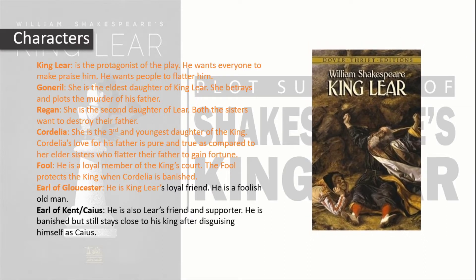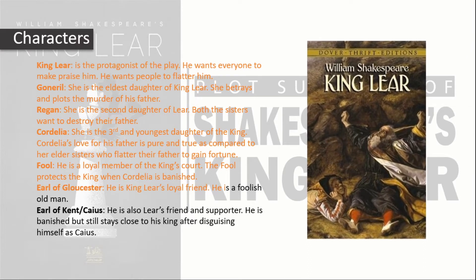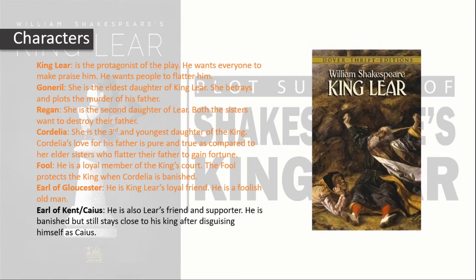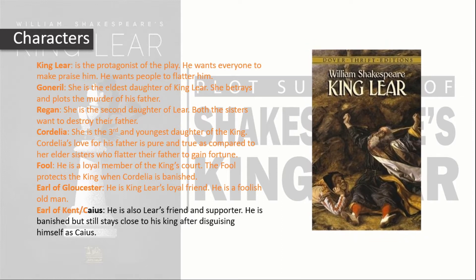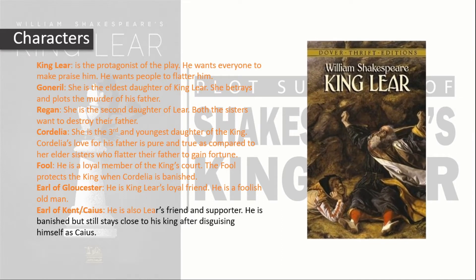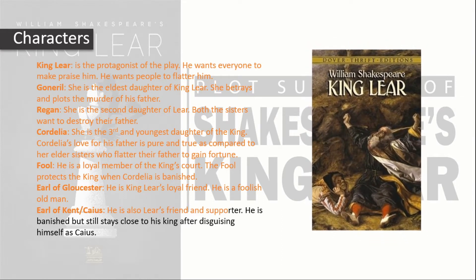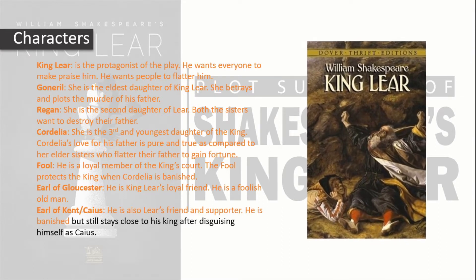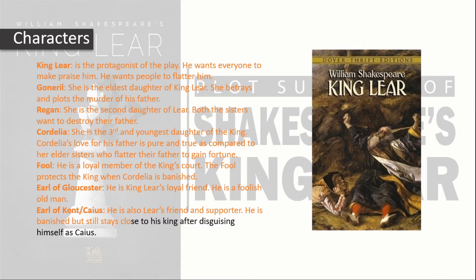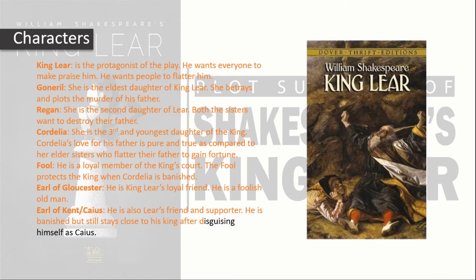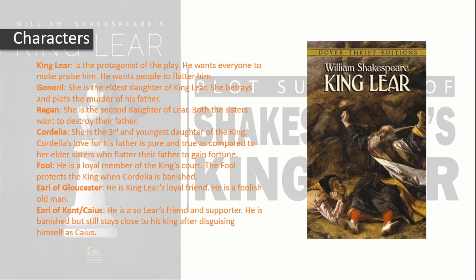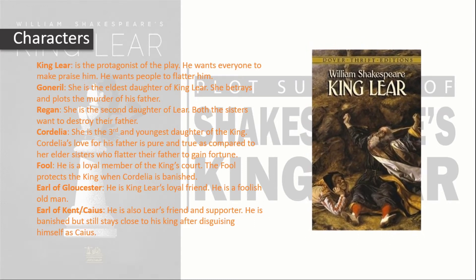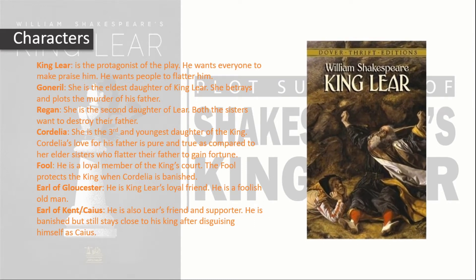The Earl of Gloucester is King Lear's loyal friend, though he is a foolish old man. The Earl of Kent, also known as Caius, is also Lear's friend and supporter. He is banished but still stays close to his king after disguising himself as Caius.